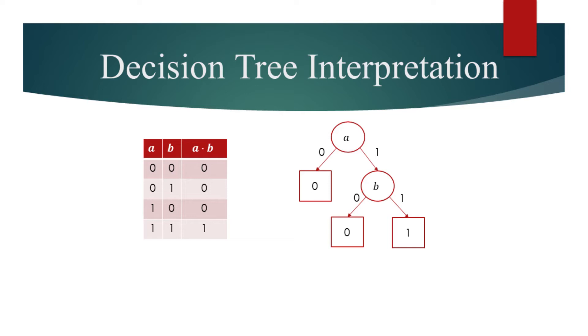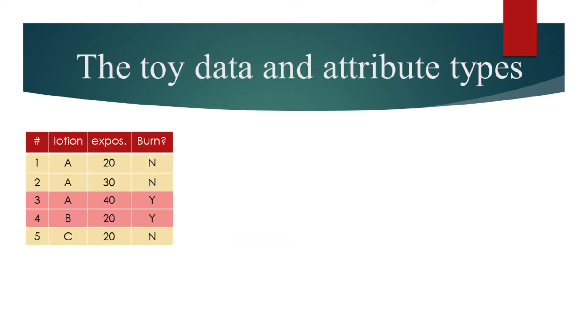Let's now explore a toy dataset and then build the decision tree for it. The following table shows us whether each of the 5 subjects got sunburned, based on the type of sunscreen they used and how long were they exposed to the sun in minutes.